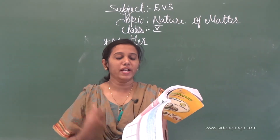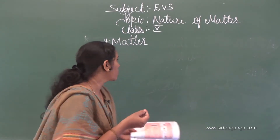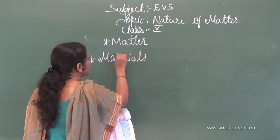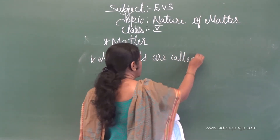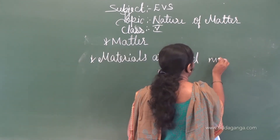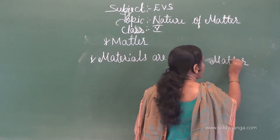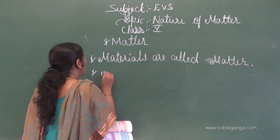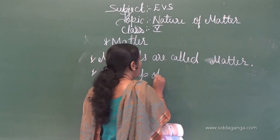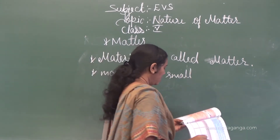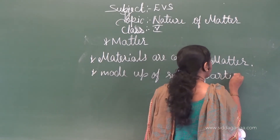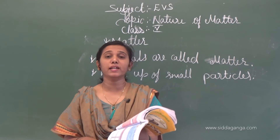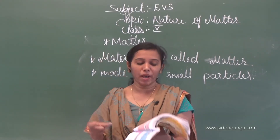Materials are called matter. Scientifically, materials are called matter. Matter is made up of small particles. The smallest piece of matter is called a particle.